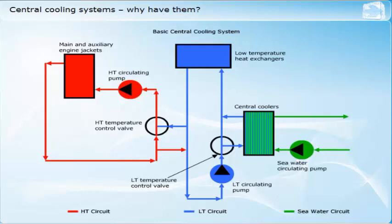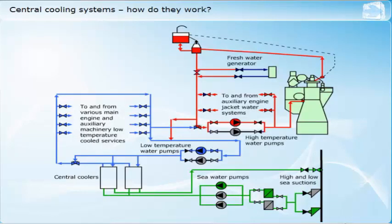A basic central cooling system has two interconnected freshwater circuits: one, a high-temperature circuit, and the other, a low-temperature circuit, and a simple seawater circuit.